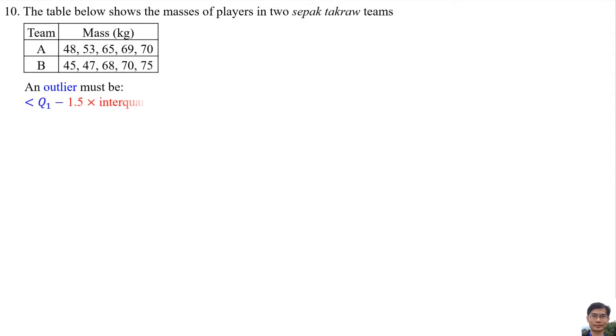An outlier must be less than the first quartile minus 1.5 multiplied by the interquartile range, or greater than the third quartile plus 1.5 multiplied by interquartile range. We will study these formulas in Form 6.